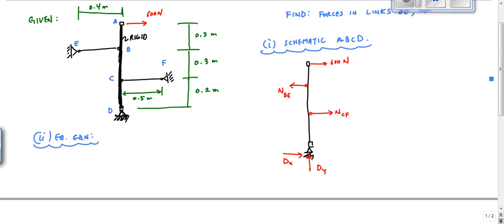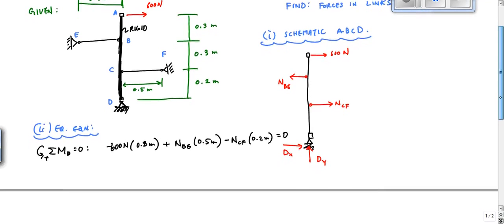And that one is sum of the moments about D. Right here. So if I sum moments about D right here, I would get that minus 600 Newtons times 0.8 meters, plus N_BE times 0.5 meters, minus N_CF times 0.2 meters equals 0. Everyone okay with that? So that would be true. There's one right there.